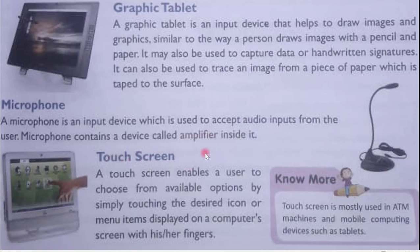Next is the touch screen — I think all of you are using mobiles nowadays, so you are familiar with it. A touch screen enables a user to choose from available options by simply touching the desired icon or menu item displayed on the screen with their fingers. Inside the touch screen there are electrical layers in a criss-cross pattern. Whenever you touch anywhere, there is a slight disturbance in that area, and that particular icon or object executes. For example, when you click on WhatsApp, there is a change in the electrical current flow in that area, which makes WhatsApp open.